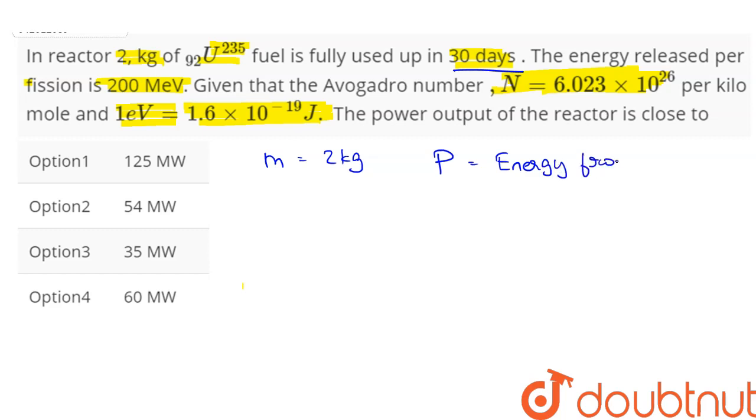So 2 kilograms of uranium-235 divided by the total time which is equal to 30 into 24 into 3600. This is in seconds. One hour consists of 3600 seconds and one day consists of 24 hours. So multiplying this with 30, we get the total time in seconds.